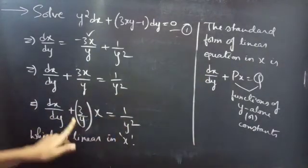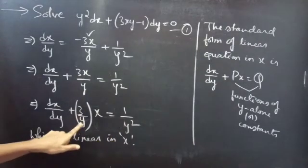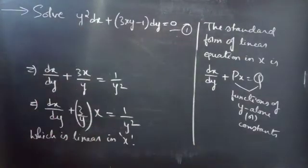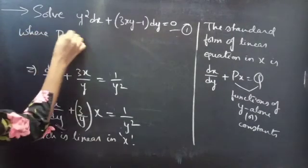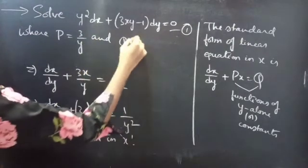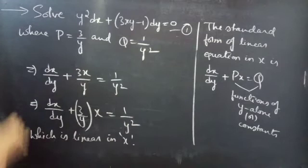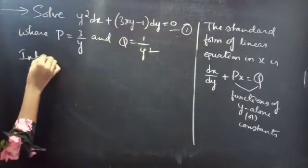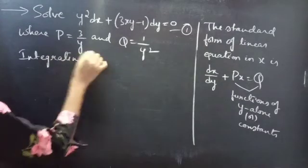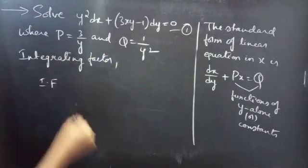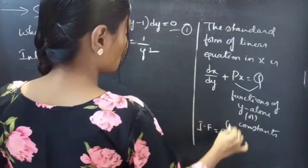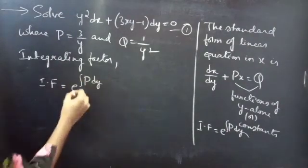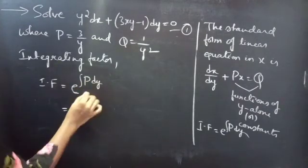Where P and Q are functions of y alone. Here, 3/y is a function of y and 1/y² is also a function of y. So P = 3/y and Q = 1/y², which are functions of y alone. Now, we need to find the integrating factor.